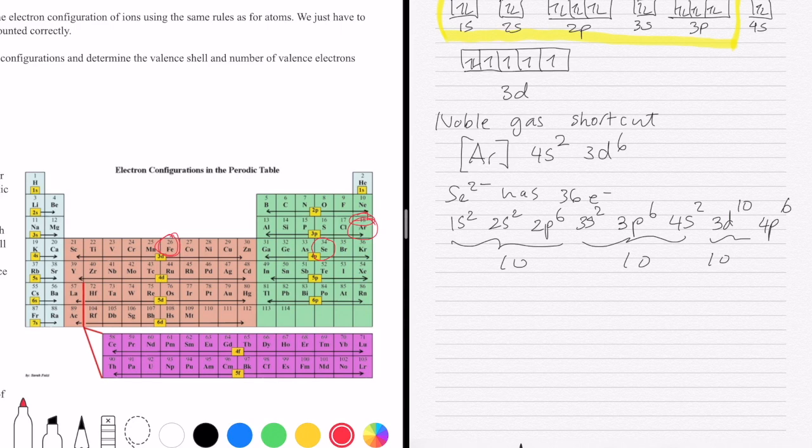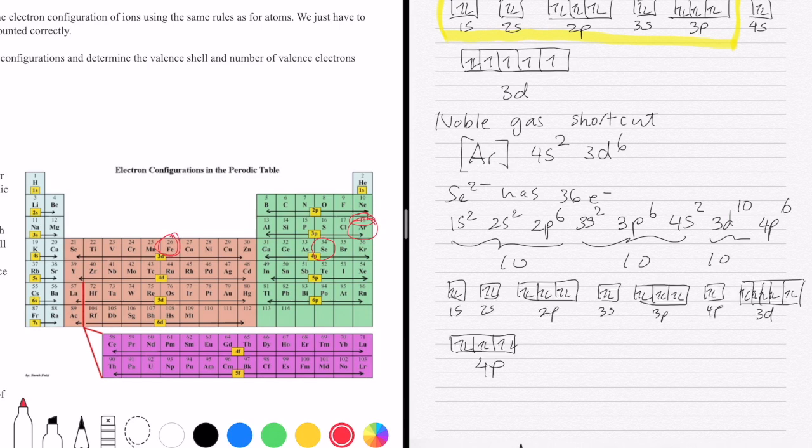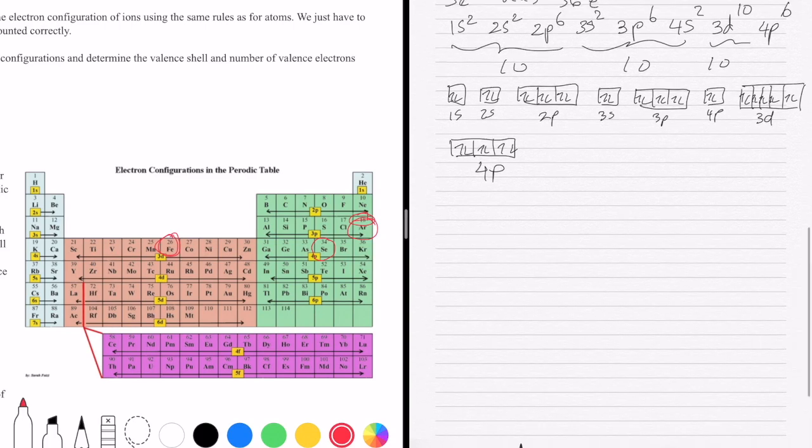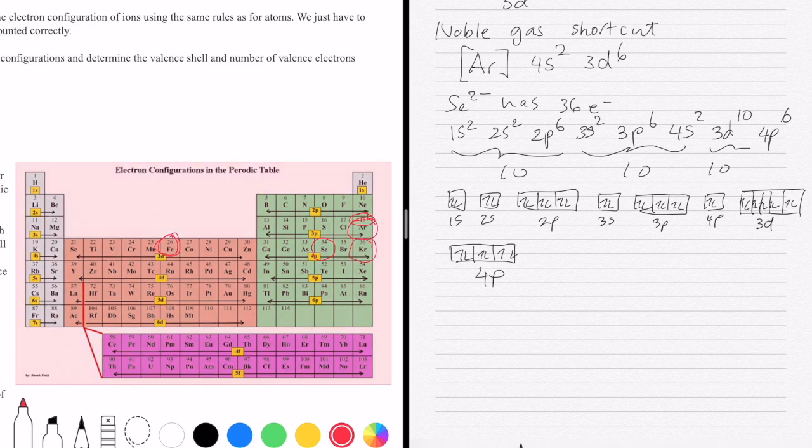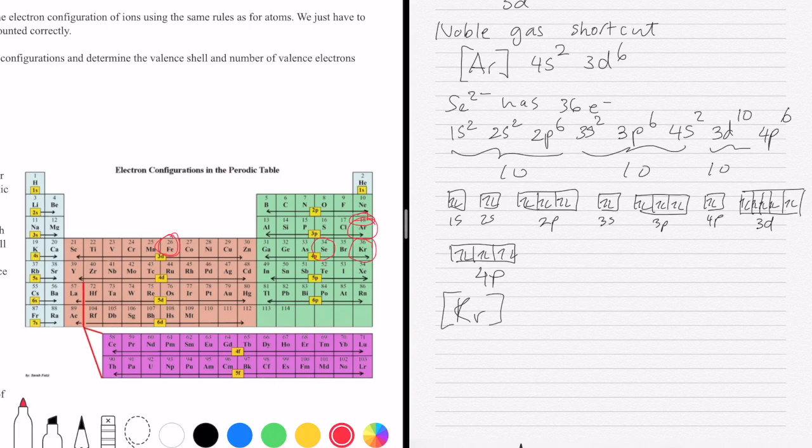If you want to do it as your orbital diagram, you would just have to draw all of them. And you can see that that's what it would look like for the orbital diagram. Now, as it happens, if you want to use the noble gas, the selenite ion is exactly the configuration of the noble gas krypton. So another way to write that is just that. That will be the noble gas shortcut for selenite.